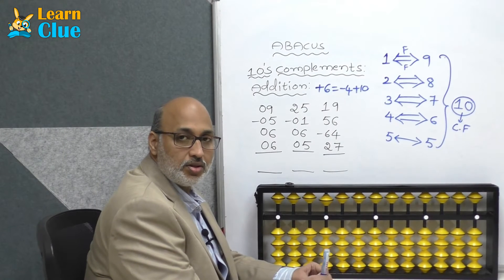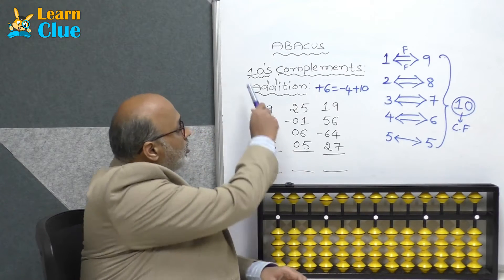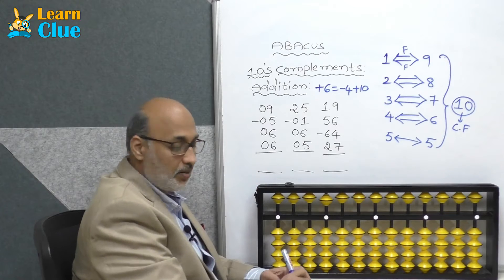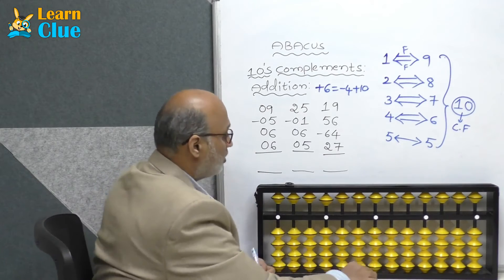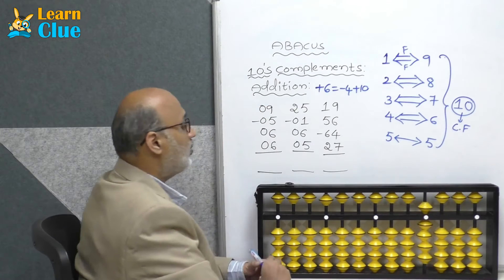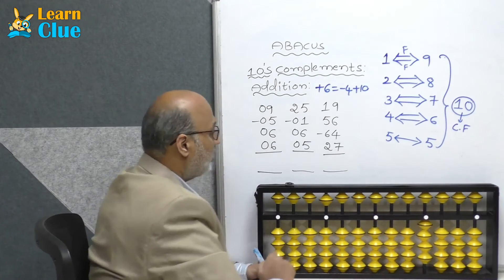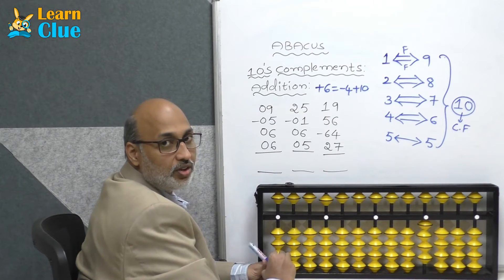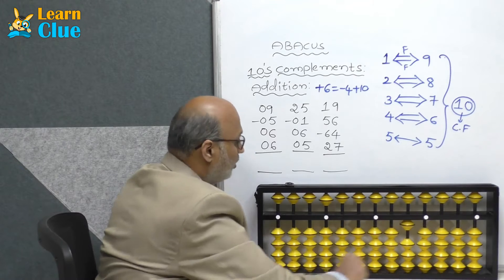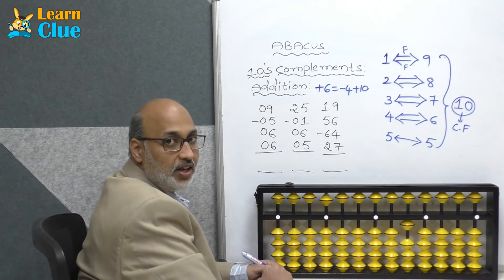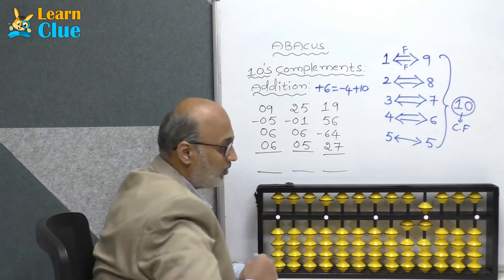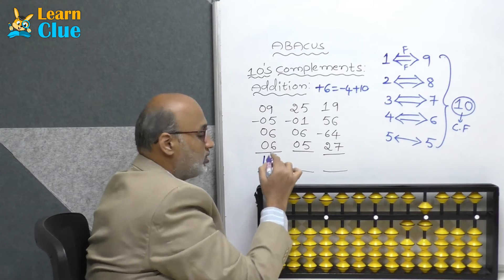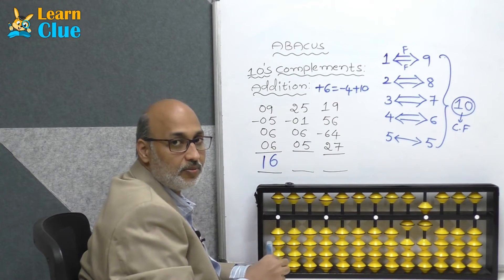Hi students, in this session we are going to learn about tens complements addition plus 6 technique. Let's try some examples. 9 direct, minus 5, again direct plus 6 — which is not possible. Who is the friend of 6? 4. So minus 4 plus 10. Now they are asking again plus 6, which is directly available. What is the answer? Answer is 16.